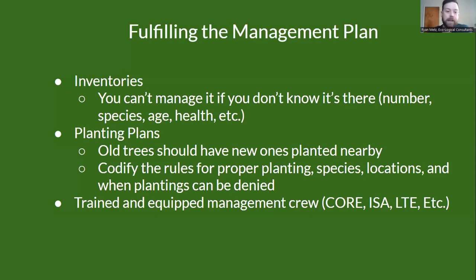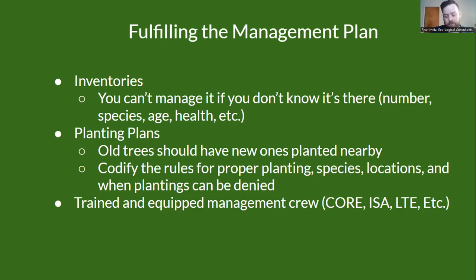Fulfilling the management plan starts with an inventory, because you can't manage what you don't know you have. Some people do exhaustive inventories covering everything about the tree — sidewalk defects, things hanging in the tree, percent dead branches, percent canopy cover. But for the most part, you just need to know the species, how big it is, and the general condition. Those three factors alone give you the vast majority of data points needed to develop a maintenance plan or determine what's in greatest need.